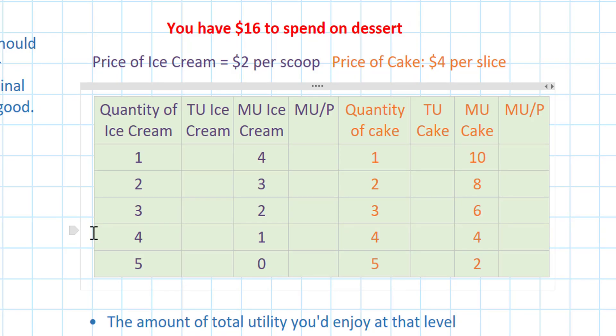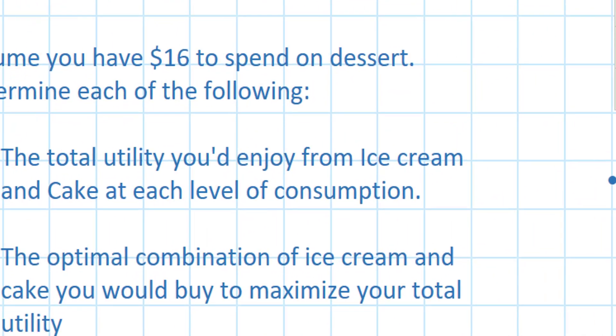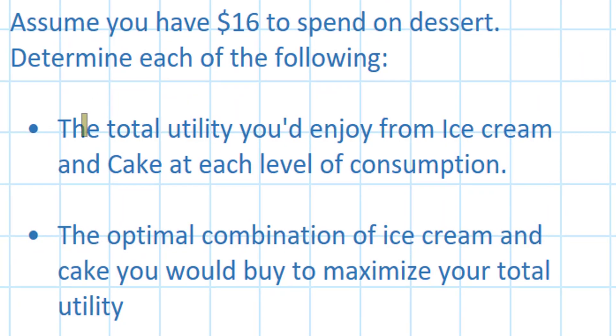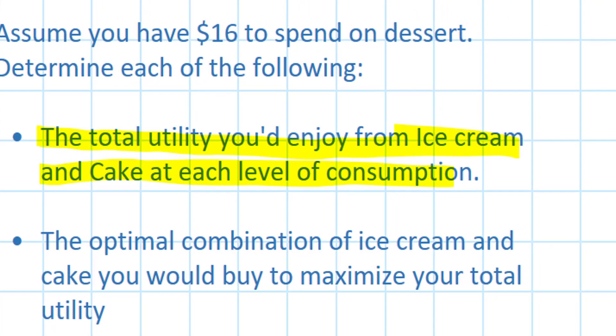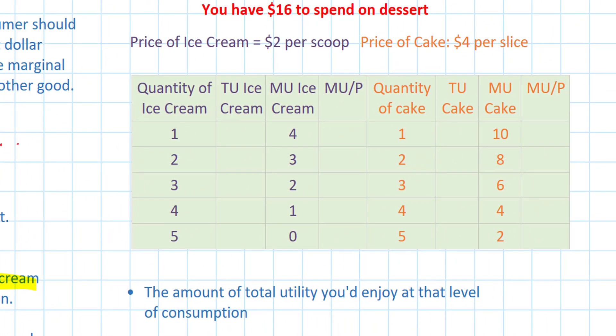The question is: how much ice cream and how much cake should I buy to maximize my total utility? The first question in this problem asks us to determine the total utility of cake and ice cream at each level of consumption. In my table, I'm not given the total utilities — only the marginal utilities for each scoop of ice cream and each slice of cake.